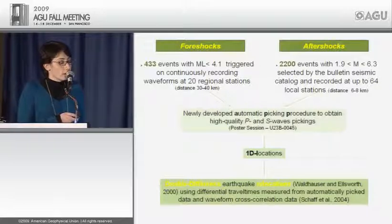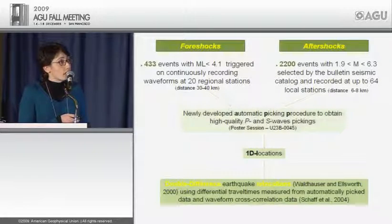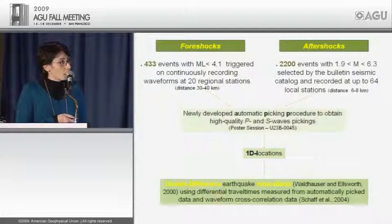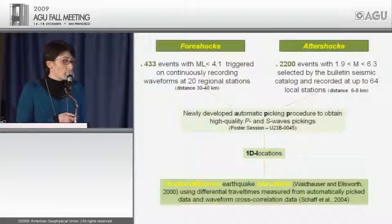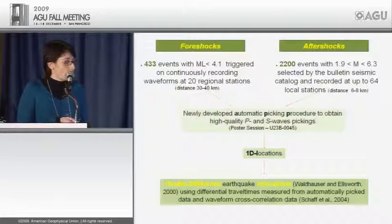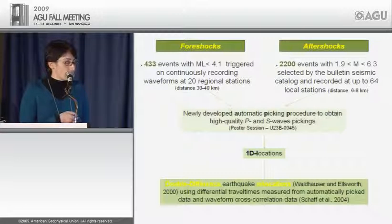P and S wave arrival times were measured using a newly developed automatic picking procedure — details will be given at the poster session tomorrow. We obtained 1D locations using an optimized 1D P-wave velocity model for the area, with a weighting function varying with distance to account for network geometry changes over time. At the end we applied double-difference relative relocation using picked data and waveform cross-correlation data, resulting in formal relative location errors of about hundreds of meters for foreshocks and tens of meters for aftershocks.